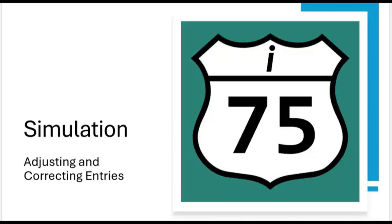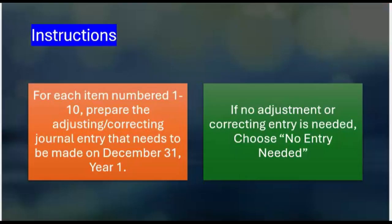Alright, here's a SIM on adjusting and correcting entries. And here are the instructions. For each item numbered 1 to 10, prepare the adjusting or correcting journal entry that needs to be made on December 31st, year 1. If no adjustment or correcting entry is needed, choose no entry needed.